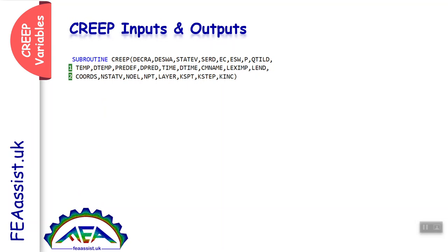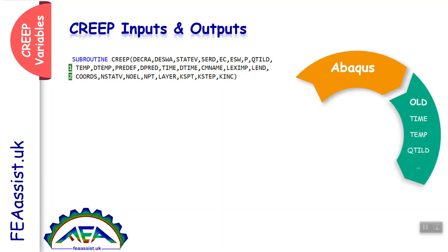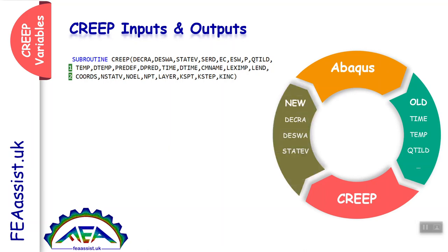Some of these variables are inputs from Abaqus. In the CREEP subroutine, we do some calculations on them and return the new values to Abaqus. Abaqus computes the creep variables and transfers variables — time, temperature, deviatoric stress — into the CREEP subroutine. In the CREEP subroutine we define the creep strains, swelling strains, and state variables and return them back to Abaqus. Abaqus uses the creep strain to recompute temperature, stress, and other variables, and this loop continues to solve our problem.